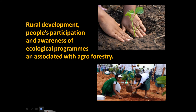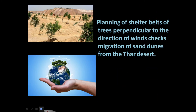Other agronomic measures include planning of rural development, people's participation and awareness of ecological programs, and association with agroforestry. In desert areas, planting shelter belts of trees — which stand perpendicular to the direction of the wind — checks the migration of sand dunes and has also proven effective in preventing coastal erosion.